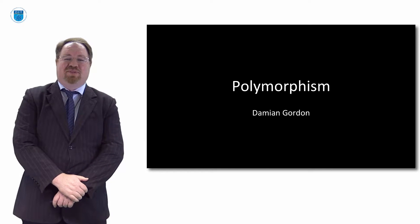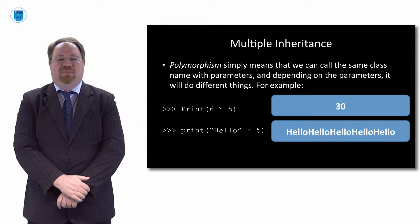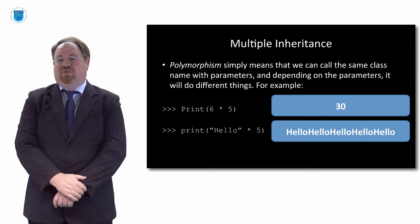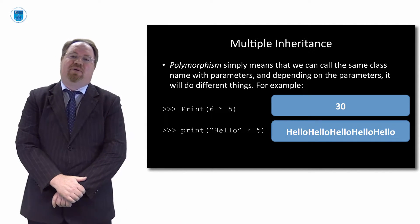Hello everybody, you're very welcome to this episode of Object-Oriented Programming. In this episode we're going to look at polymorphism. So what is polymorphism? All it means is if we call the same class name, it'll do different things depending on the parameters passed in.